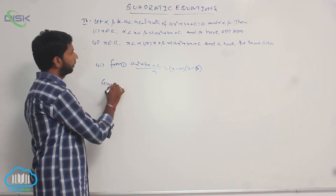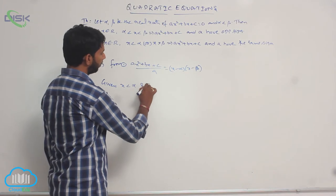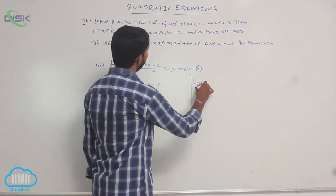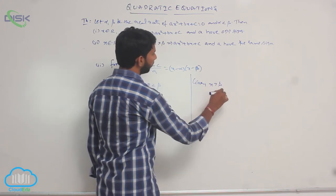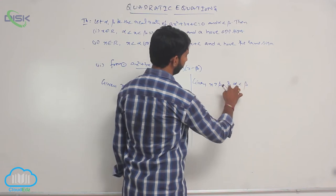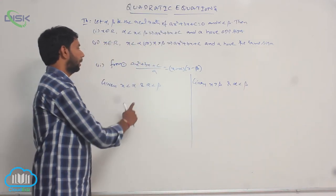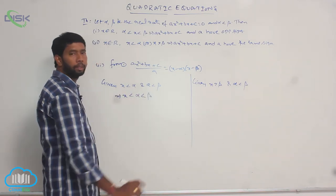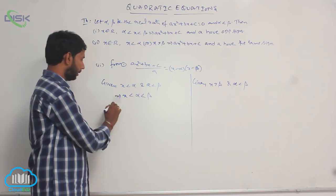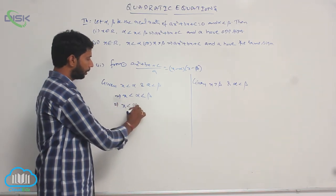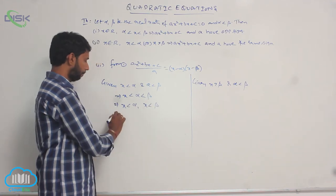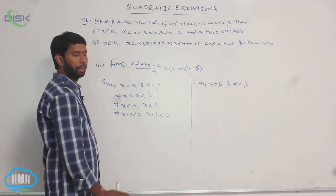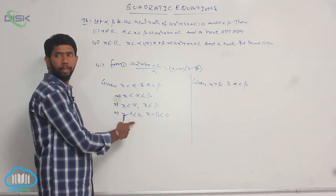Case 1: Given x less than α and α less than β. Combining these two conditions, that implies x less than α less than β — that is, x minus α is less than 0 and x minus β is less than 0. Here, x minus α is negative and x minus β is negative.